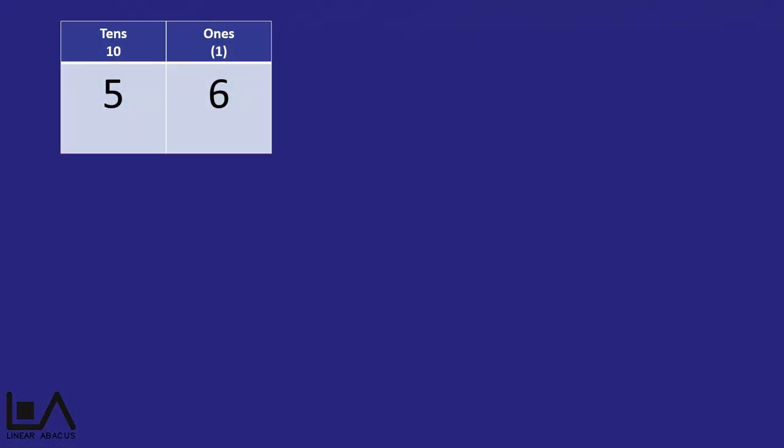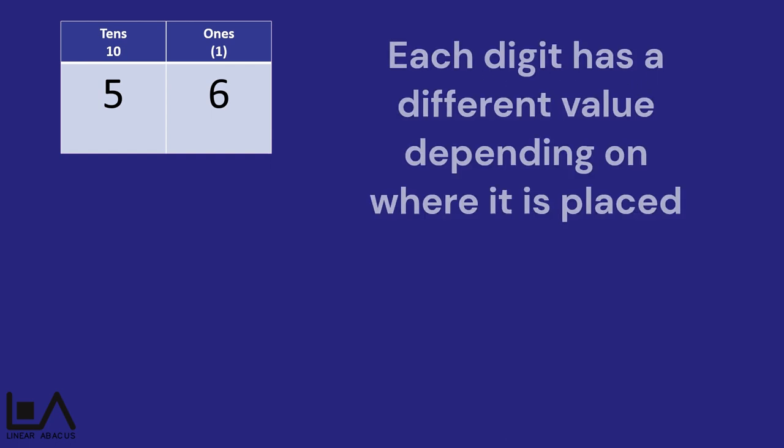The base 10 number system uses positional notation, which means that each digit will have a different value depending on where it is placed in the numeral.